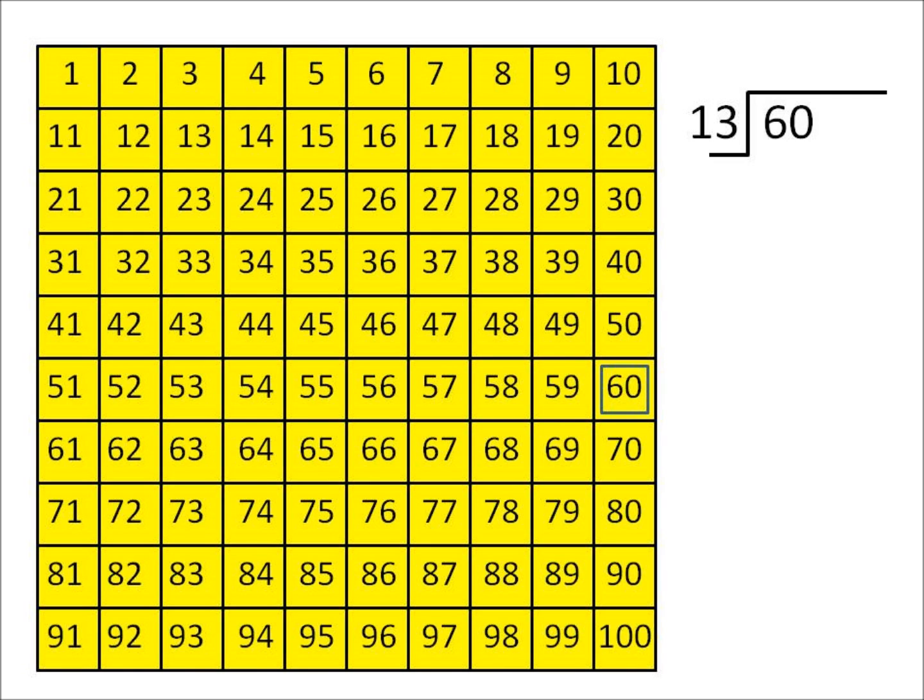This mark is going to be different or a different color than the mark that you use to count off your divisors. So 60 is marked in a square in this case, and then we're going to do this next step which would be to count off your divisor.